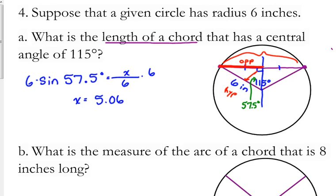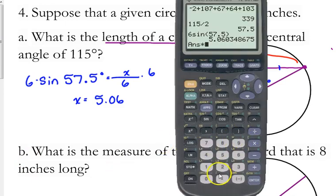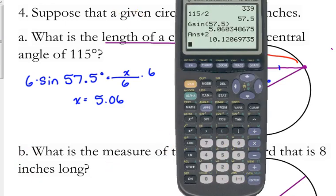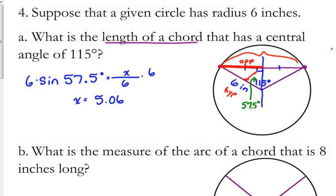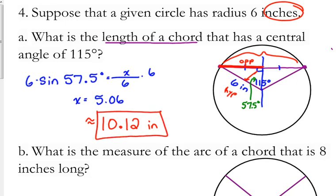But it wanted the length of the chord. That chord is cut in half. So, what do we do to that number? Multiply it by 2. 10.12 inches. Because those were the units we were given in the initial problem. Okay. So, that chord is approximately 10.12 inches.